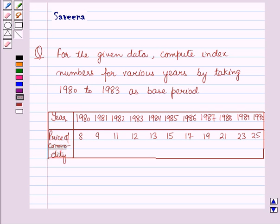The data is given in which the years are 1980, 1981, 1982, 1983, 1984, 1985, 1986, 1987, 1988, 1989, and 1990, and the corresponding prices of the commodity are given as 8, 9, 11, 12, 13, 15, 17, 19, 21, 23, and 25.